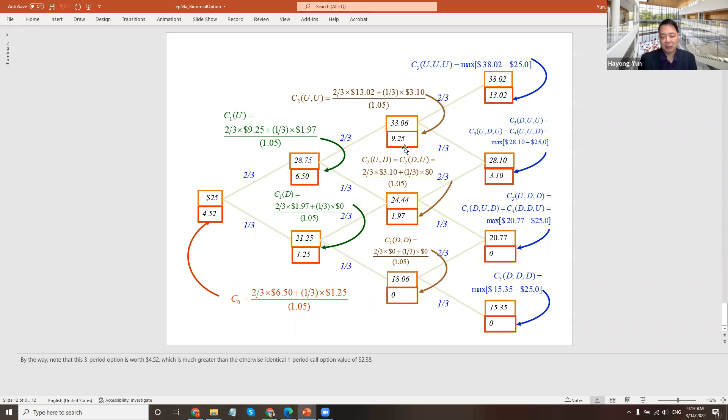We take each small scenario, subtrees, as a two-period model. $13.02 option price up and $3.10 down, weighted by two-thirds and one-third probability, discounted by $1.05, gets you $9.25. Likewise, $3.10 times two-thirds and zero times one-third, discounted, gets $1.97. Zero and zero gets zero. Now we found the option values of the second to terminal date. Then this subtree: two-thirds of $9.25 and one-third of $1.97, discounted, is $6.50. Two-thirds of $1.97 and one-third of zero gets $1.25. Finally, two-thirds of $6.50 and one-third of $1.25, discounted, gets $4.50.